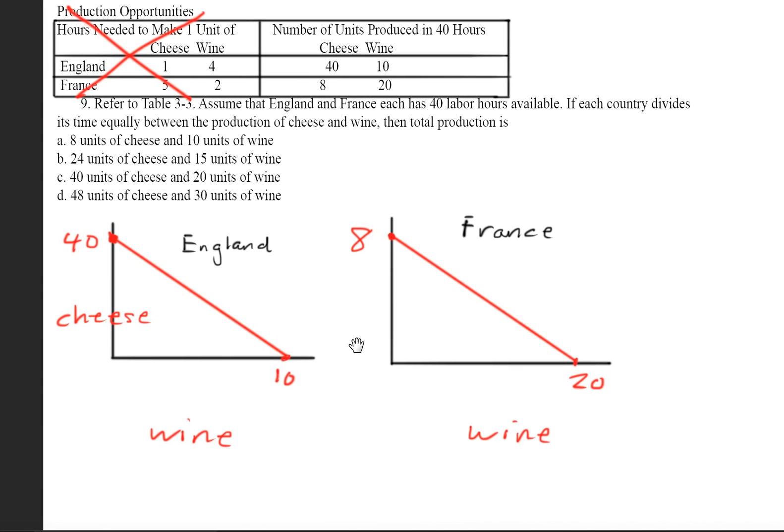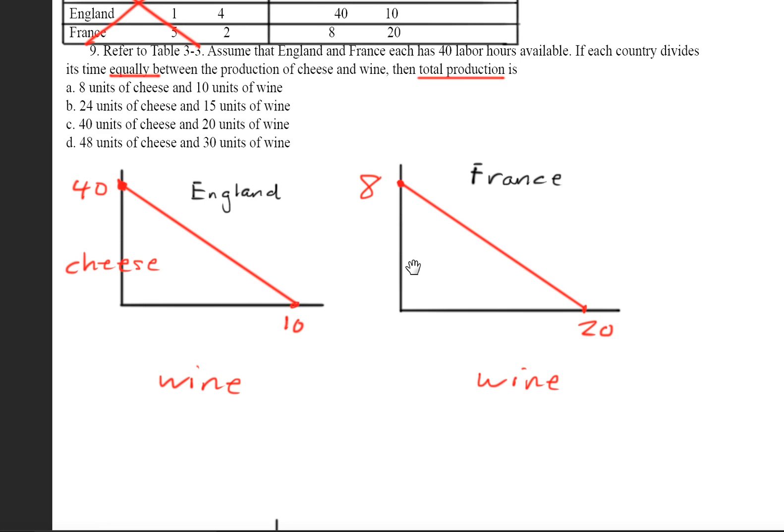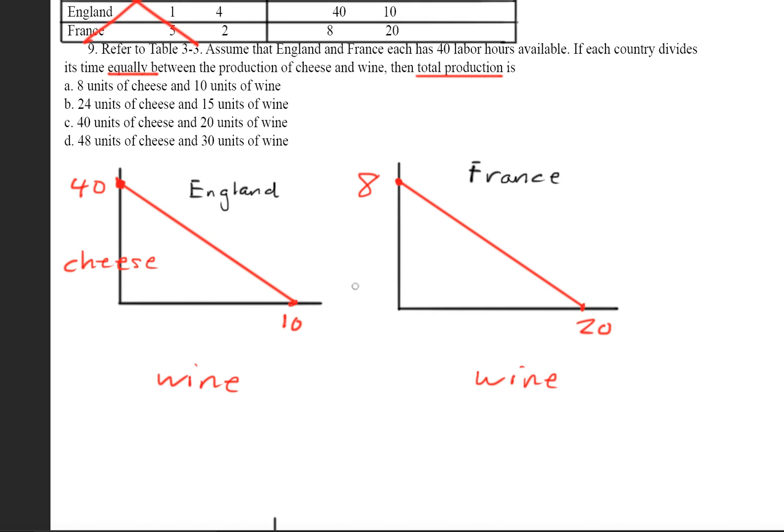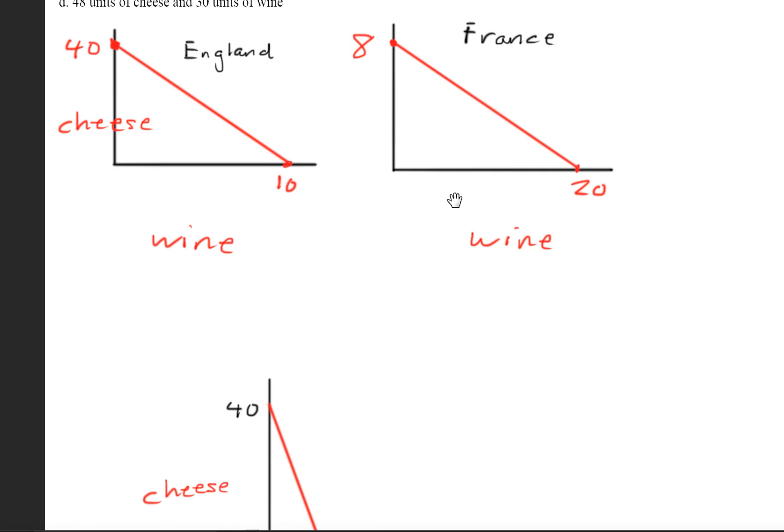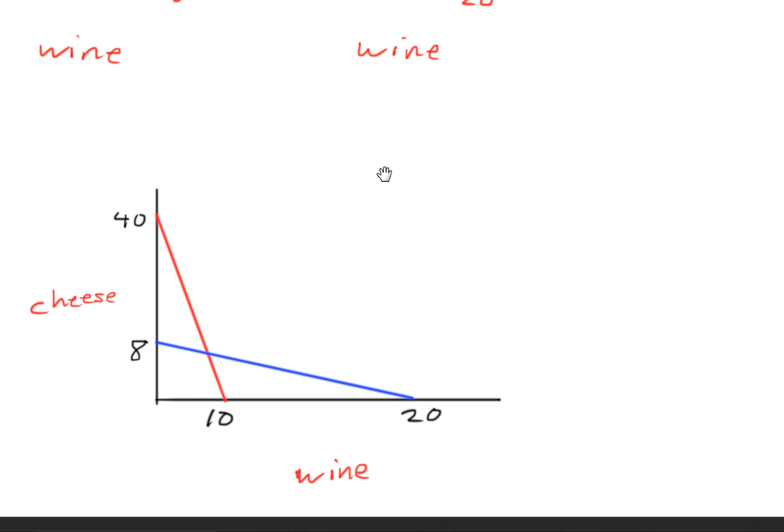So now that we've got that out of the way, the question is asking, if they divided their time equally, then what is the total production? So what we have to do is essentially both countries are working together to produce a certain amount of production right here. So what we can do is we can almost superimpose these graphs on top of each other. And it would look something like this.